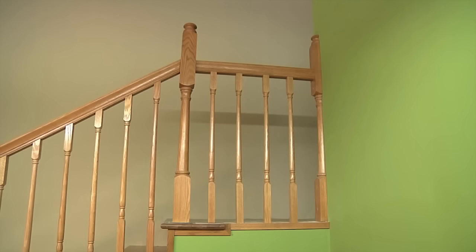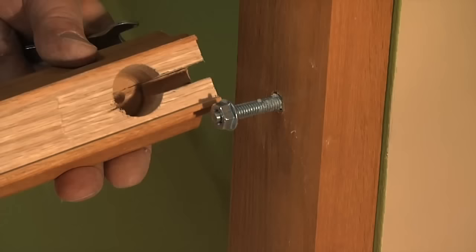For straight sections of railing, cut the handrail to the correct length, install the bolts into the newels, set the balusters into place and install the handrail.